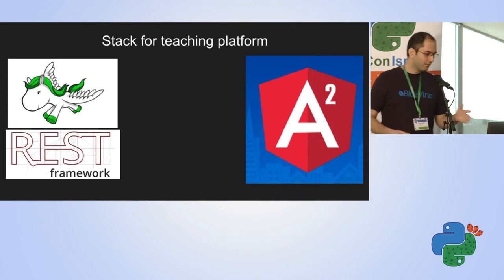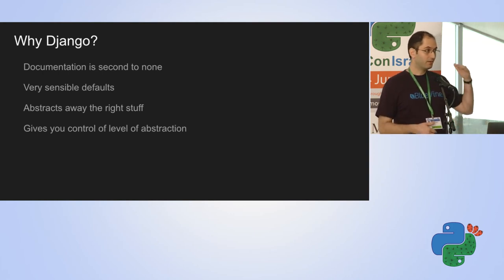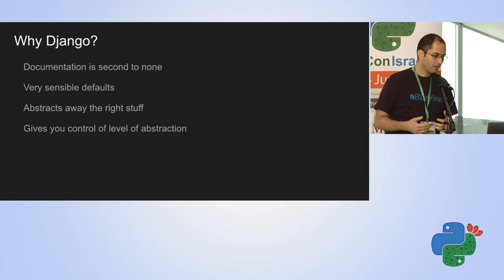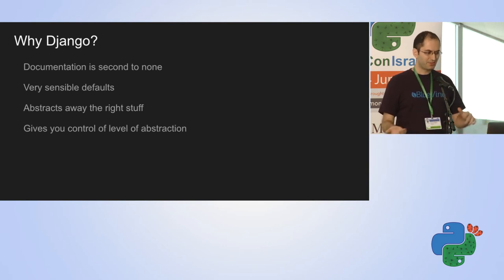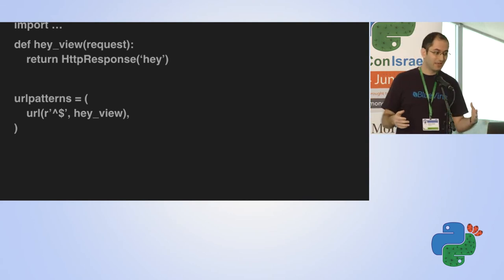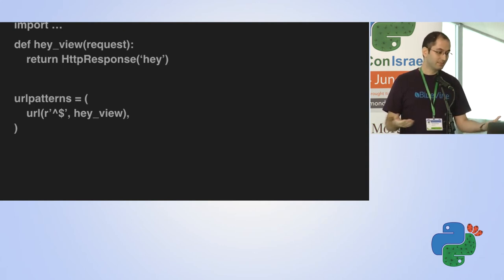The stack I used is now outdated — it uses Angular 2, REST Framework, and Django. Why Django? The documentation is second to none, the defaults tend to be very sensible, it abstracts away the right stuff but more importantly gives me control over the level of abstraction. People fail to notice that it doesn't have to be a monster of a framework — even a minimal Django app is still a Django app.